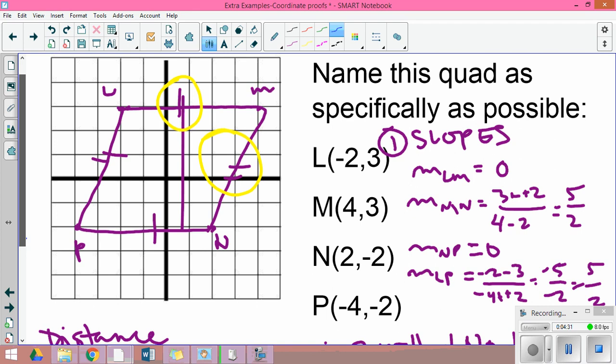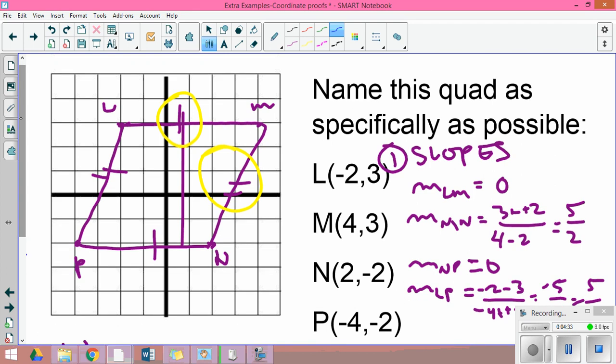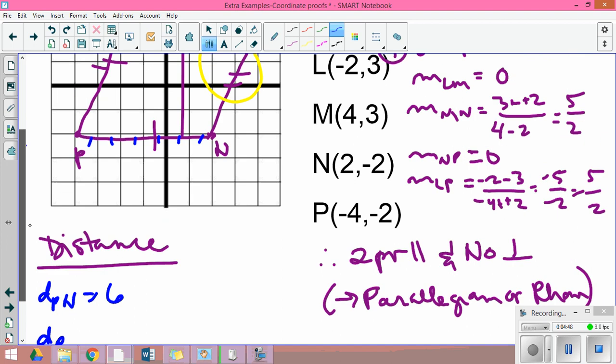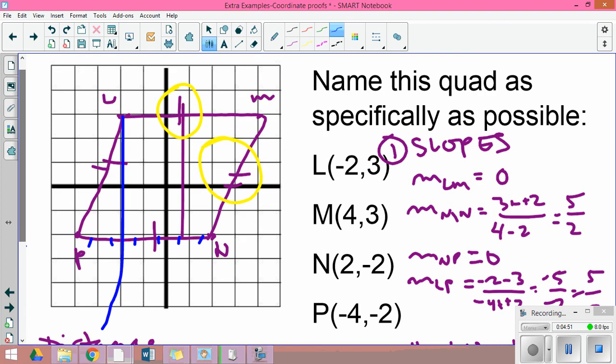I want to check consecutive sides and that will tell me whether or not I have a parallelogram or a rhombus. If they're equal it's a rhombus, if they're not it's a parallelogram. We can pick any two sides to check that are touching, that are consecutive. If I do the distance from P to N, that's nice because it's horizontal: one, two, three, four, five, six.